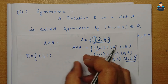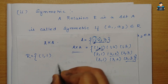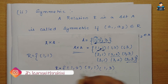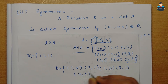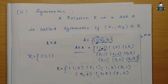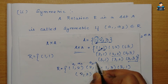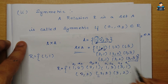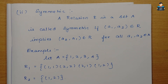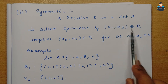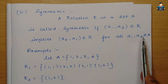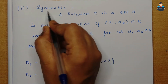For a symmetric relation, if (a1,a2) is in R, then (a2,a1) must also be in R. For example, if (1,2) is present, then (2,1) must also be present; if (1,3) is present, (3,1) must be present. This is the symmetric condition — every pair has its reverse in the relation.